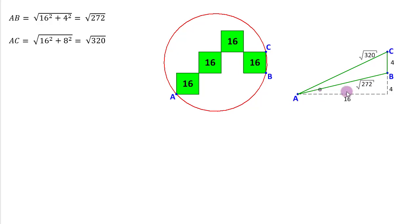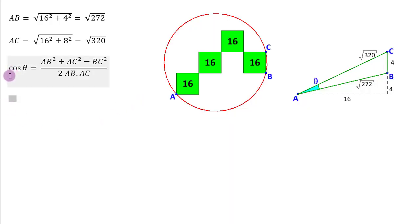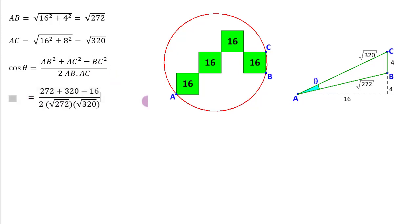We can use the cosine rule for calculating theta. It gives us cos θ equal to (AB² + AC² − BC²) divided by (2 · AB · AC), where AB and AC are the two adjacent sides and BC is the opposite side. Substituting these values, we get cos θ as 0.976, which makes θ equal to 12.5288 degrees.